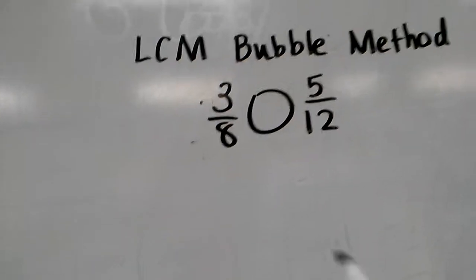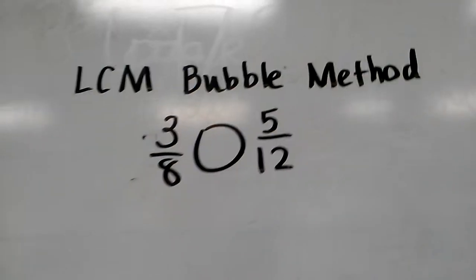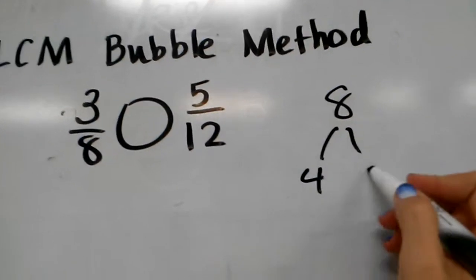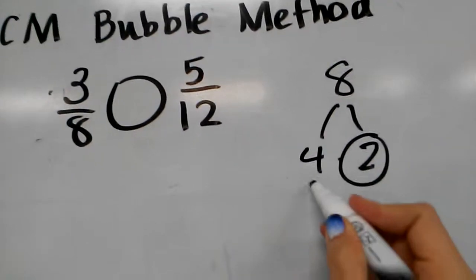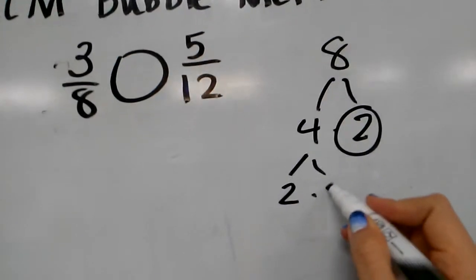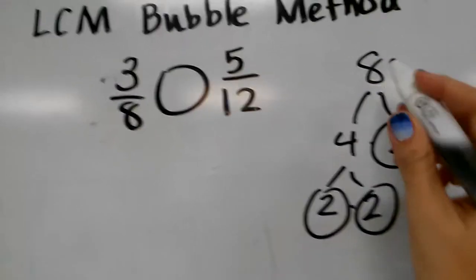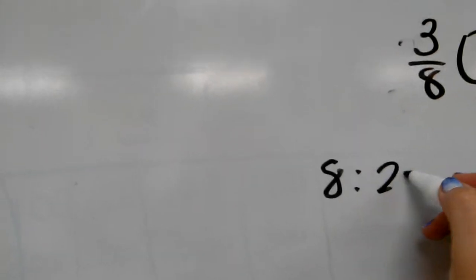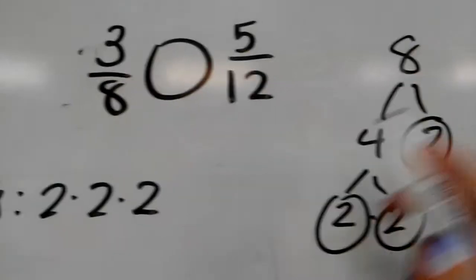With the bubble method what we need to do is first do our prime factors for 8 and for 12. So 8 has factors of 4 and 2. 2 is prime, 4 is not. Factors of 4 are 2 and 2, which are both prime. So my prime factors of 8 are 2 times 2 times 2, which I got from this factor tree.